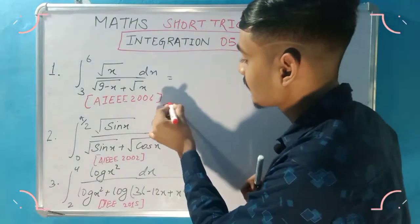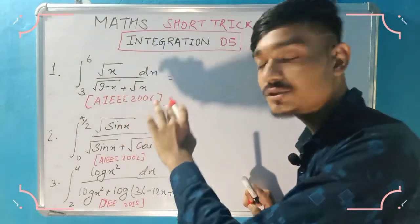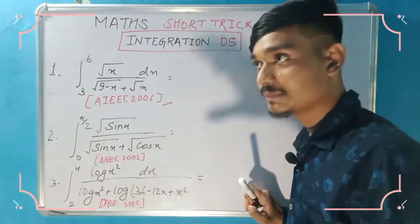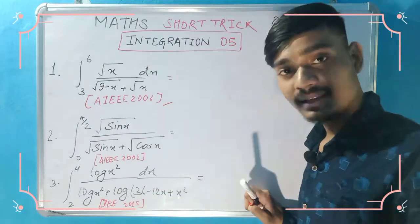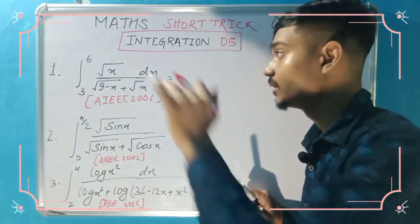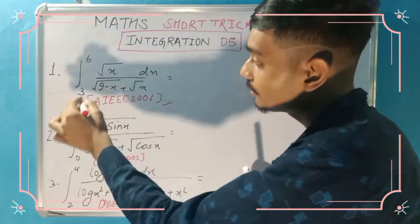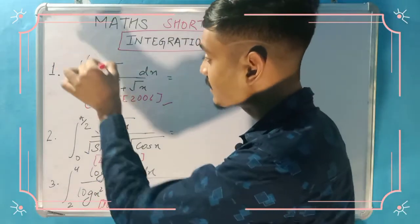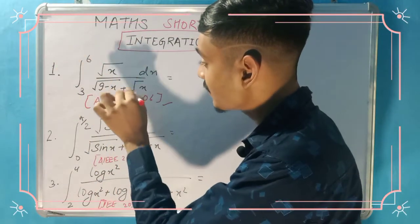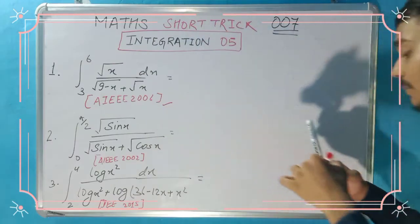See the first question. This is a question from AIEEE 2006. The question is: integral from 3 to 6 of root x divided by root(9-x) plus root x.